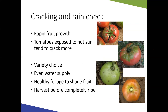Cracking and rain check occur when fruit grow faster than the skin can accommodate. Hot sun exposure tends to increase cracking, and an inconsistent water supply is a major contributor — if plants get very dry and then receive a lot of water, they may grow rapidly and crack. Provide consistent soil moisture, maintain healthy foliage to shade the fruit, and choose crack-resistant varieties. If cracking is a problem, try harvesting fruit before completely ripe and ripening indoors to reduce incidence.